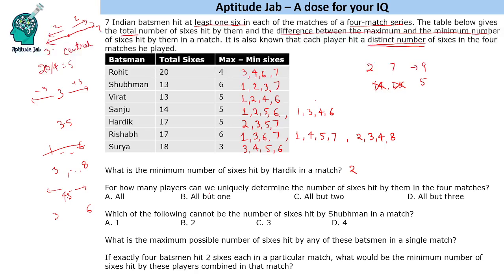For how many players can we uniquely determine the number of sixes in all four matches? We can determine it for all players except Sanju and Rishabh — so all but two. Which of the following cannot be the number of sixes hit by Shubman in a match? Shubman hit one, two, three, or seven sixes — he did not hit four sixes in any match.